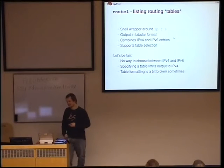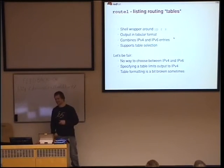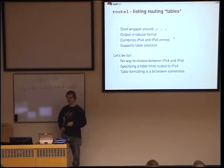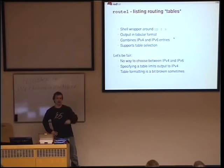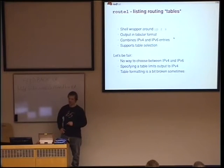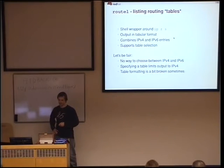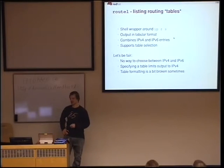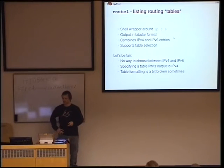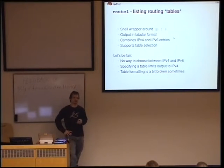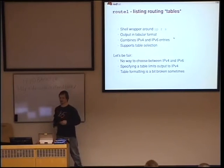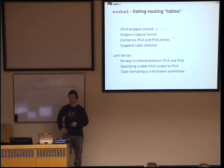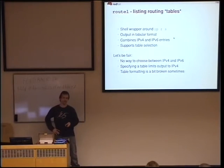There is also a tool which allows you to list routes as tables. It's basically implemented as a shell wrapper. It lists IPv4 and IPv6 routes at the same time, although you can't select them specifically. If you choose a table to display, it automatically displays only IPv4, which is pretty much a bug. And the table formatting is still a bit broken because of the column-choosing algorithm, which is not quite understandable and not well implemented.